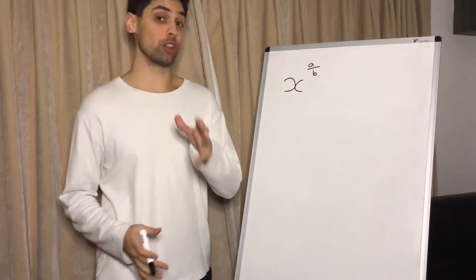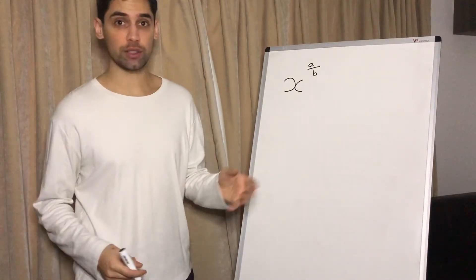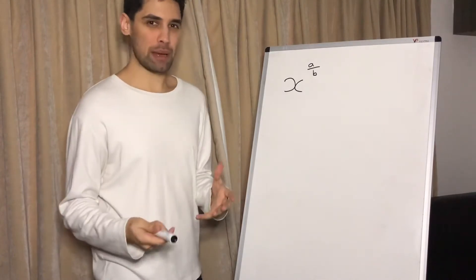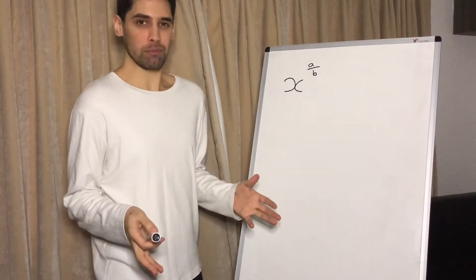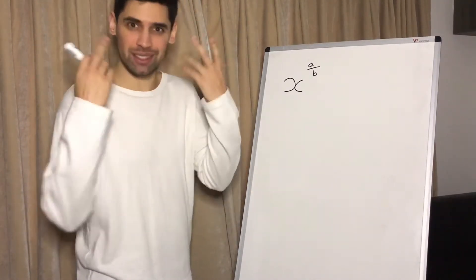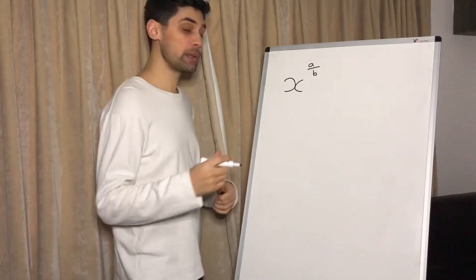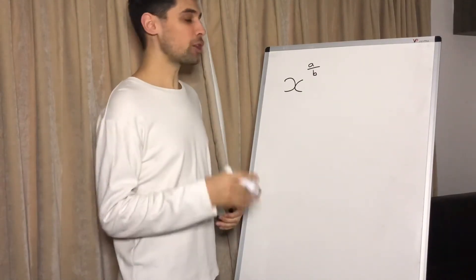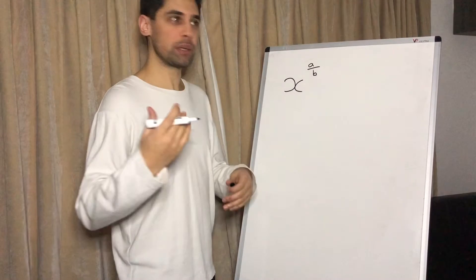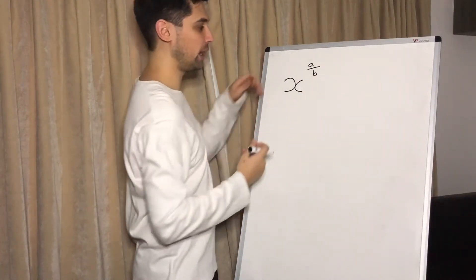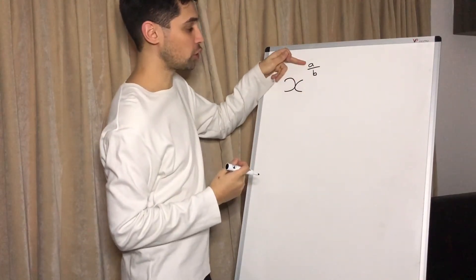Okay, let's talk a little bit about fractional indices or fractional powers. Now I've got a method to memorize what we do here. It's a bit dumb but often it's the dumb things that stick in your brain. So here we're going to be talking about flower power. Now the reason we talk about flower power is because we've got a fractional power here which has something on the top and something on the bottom.